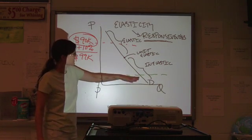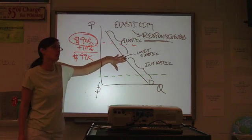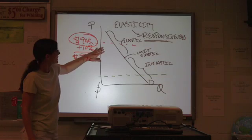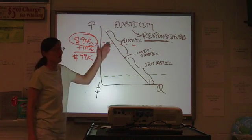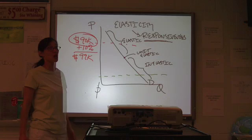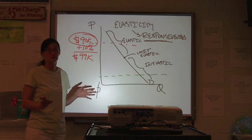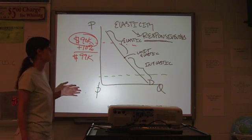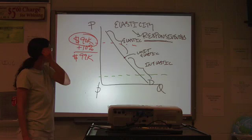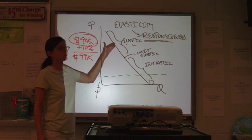Even on a straight line, we're talking about two different products here, which is not what you would do on one demand curve — I'm using that just to illustrate the concept. I don't want you to think we're talking about the demand curve for gum and sports cars. What I want to get across is that even on a straight line, you can have different regions of elasticity.